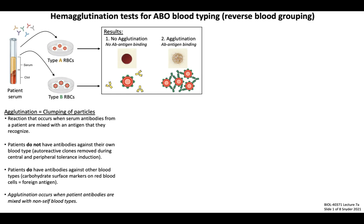Note that this form of testing is called reverse blood grouping, but you can also mix patient RBCs with either anti-A or anti-B antibodies and then look at hemagglutination — in that case, the test would be called forward blood grouping.